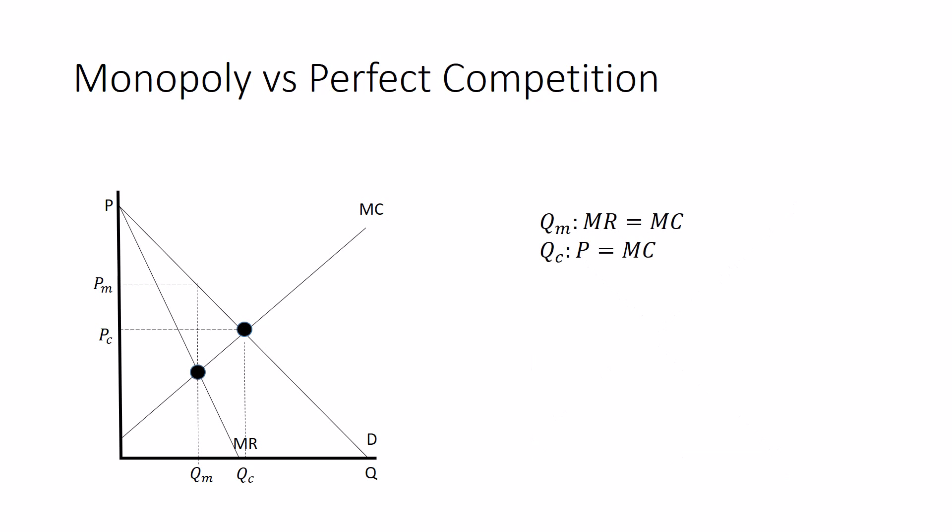The monopolist quantities are where marginal revenue equals marginal cost. The competitive quantity would be when price equals marginal cost. And because of that, we can draw a few conclusions.